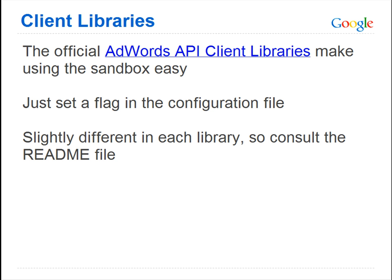If you use one of the official AdWords API client libraries, making requests against the Sandbox is easy. The only change required is setting a flag in the configuration file. This makes it simple for your application to switch between the production and Sandbox environments. Each library uses a slightly different flag, so consult the readme file that was included with the library.